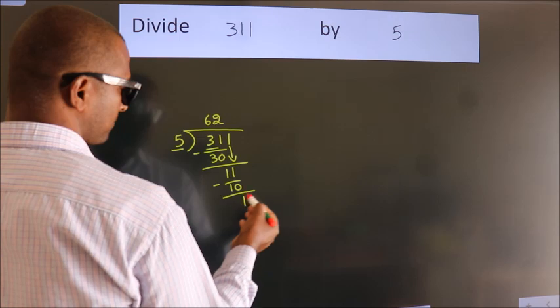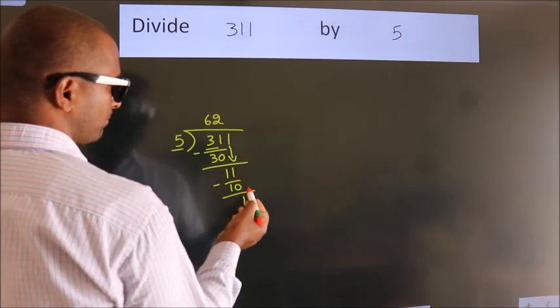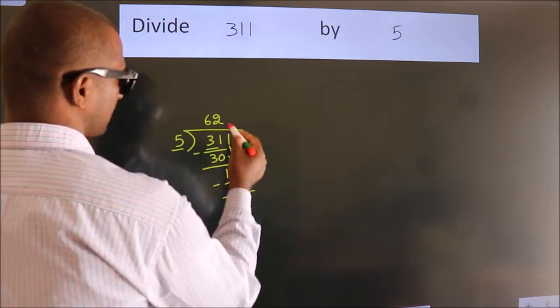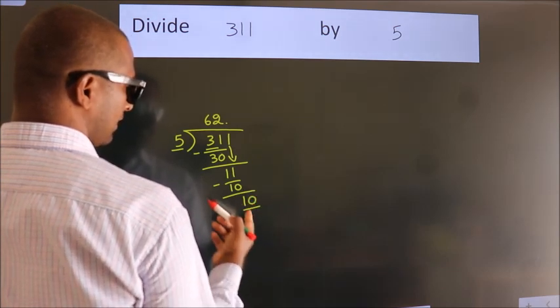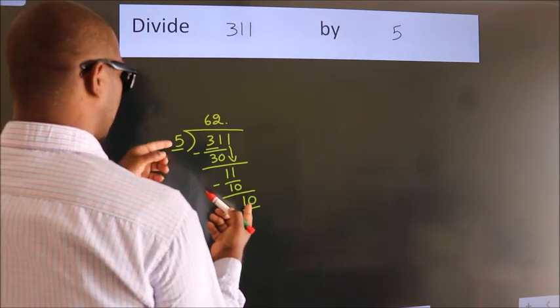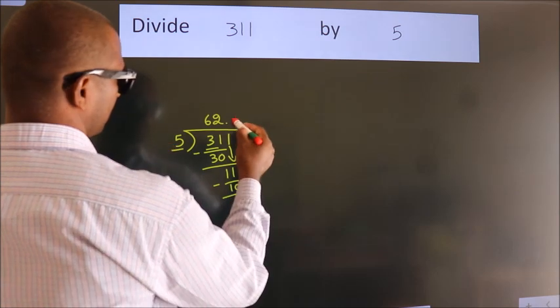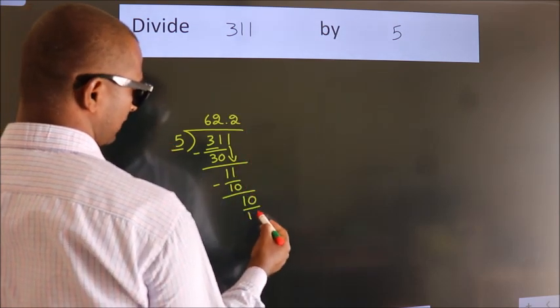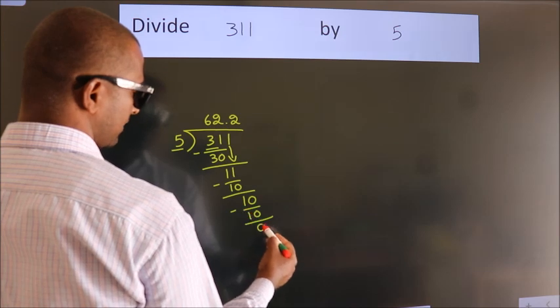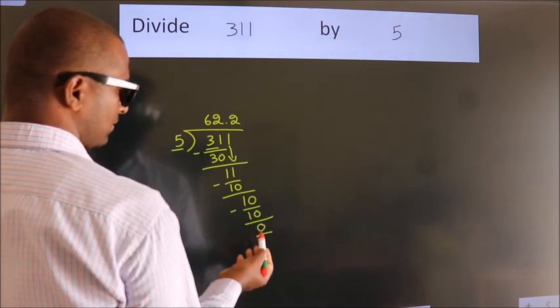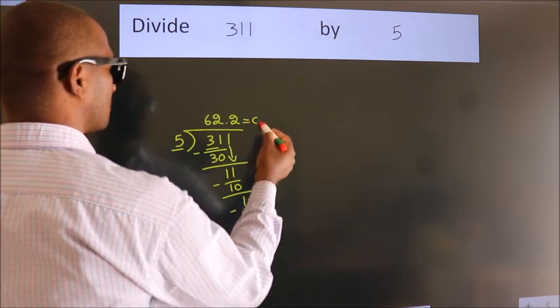After this, no more numbers to bring down. So what we do is, we put dot, take 0. So 10. When do we get 10? In the 5 table, 5 times 2, 10. Now we subtract. We get 0. We got remainder 0. So this is our quotient.